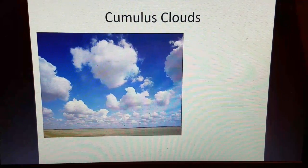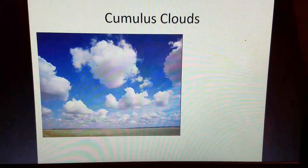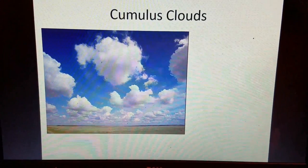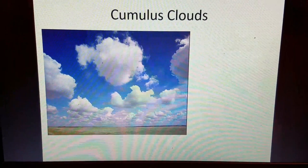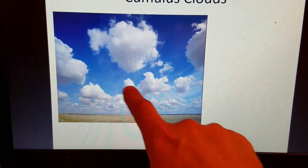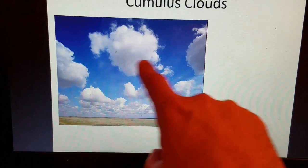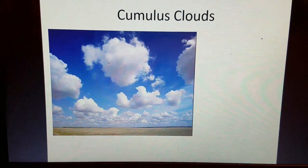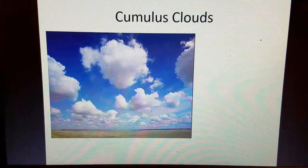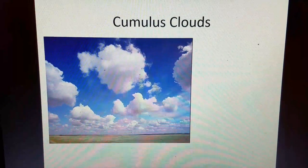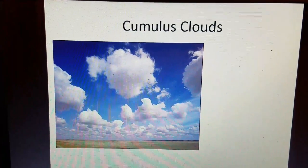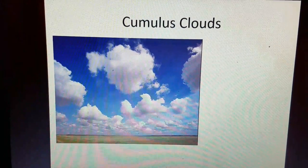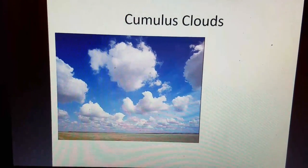Cumulus clouds are just puffy, cottony clouds — you see them a lot during the summertime. They resemble cotton balls, and you'll see little blue clear areas between them where the air is sinking. Cumulus clouds are a lower cloud, typically occurring from about 1,500 to 3,000 feet above the ground.